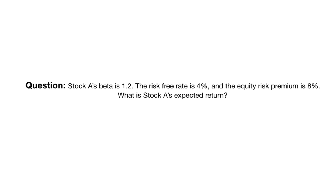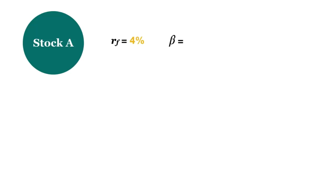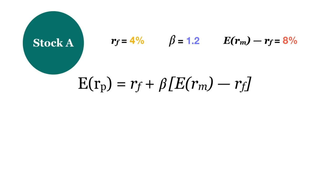Let's try it together. To solve a question, it's a good idea to list out all the given information first. The risk-free rate is 4%, the beta is 1.2, market risk premium, which is ERM minus RF, is 8%. Now we plug those numbers into the CAPM formula. The expected return equals 4%, plus 1.2 times 8%. Solve that and we get the expected return of stock A to be 13.6%.